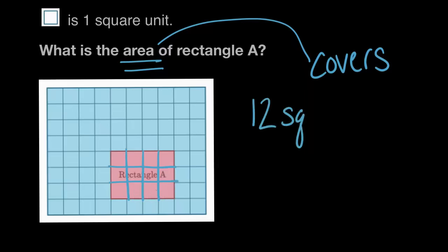Twelve square units. Rectangle A covers twelve square units, so it has an area of twelve square units, but this isn't the only way that we could have solved this. We could have also said, we could have also looked at this and said, okay,